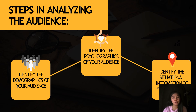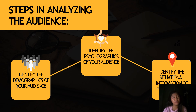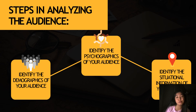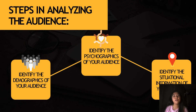Identifying the psychographics of your audience involves understanding their attitudes, values, beliefs, lifestyles, interests, and behavior patterns. Unlike demographics, which focus on observable characteristics, psychographics delve into the psychological and emotional aspects that influence individual preferences and decision-making processes. Situational information involves understanding the specific context and circumstances surrounding the event where your speech is connected — including the purpose of the event, the venue, the time and duration of the speech, the size of the audience, and any special considerations or constraints.